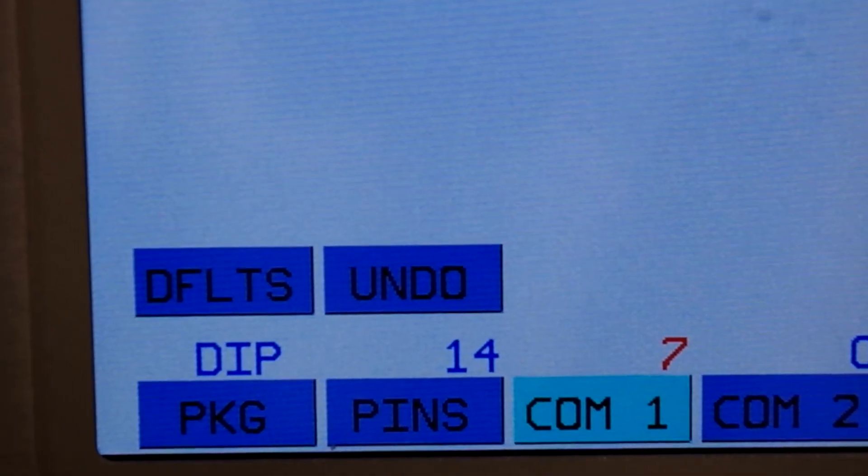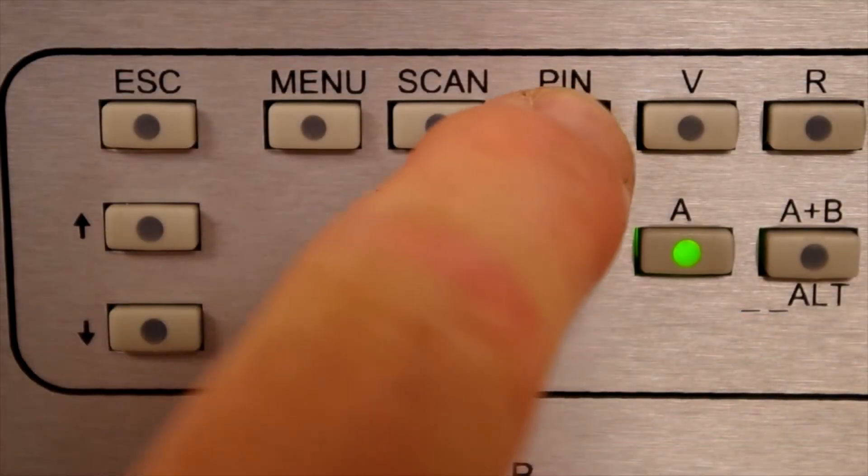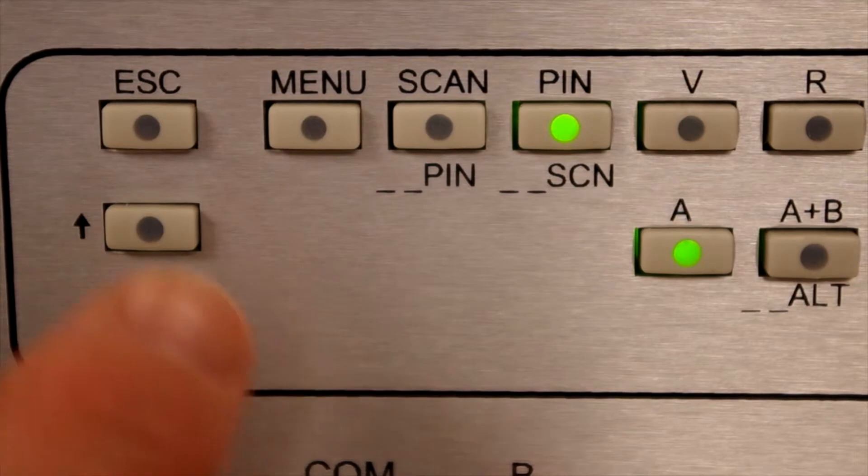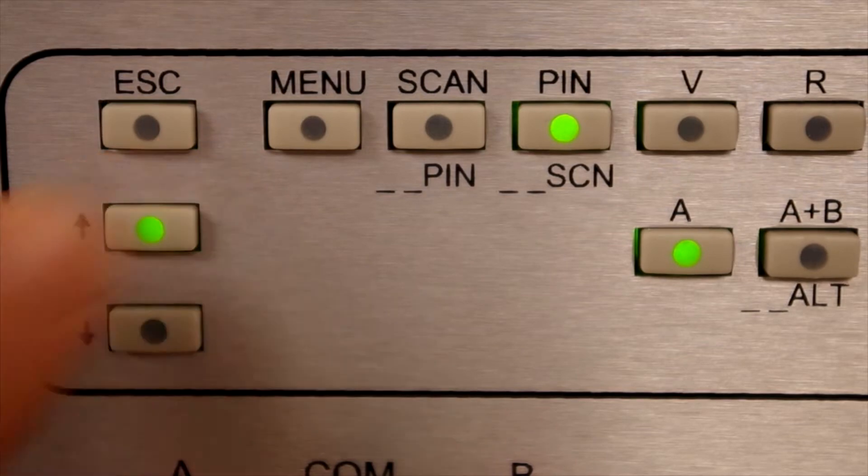Component package type and number of pins are set using the tracker touch screen menus. You can step through the device pins individually while in Alt mode or A plus B mode using the Pin Scan button to make easy pin versus pin comparisons.